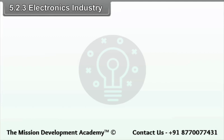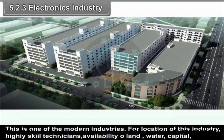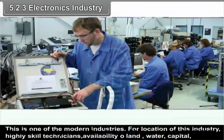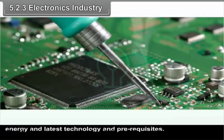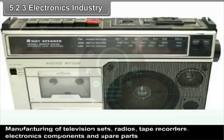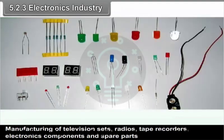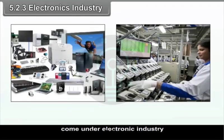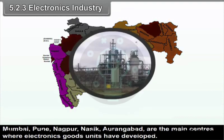The electronics industry is one of the modern industries. For location of this industry, highly skilled technicians, availability of land, water, capital, energy, and latest technology are prerequisites. Manufacturing of television sets, radios, tape recorders, electronic components, and spare parts come under electronic industry. Mumbai, Pune, Nagpur, Nasik, and Aurangabad are the main centres where electronics goods units have developed.